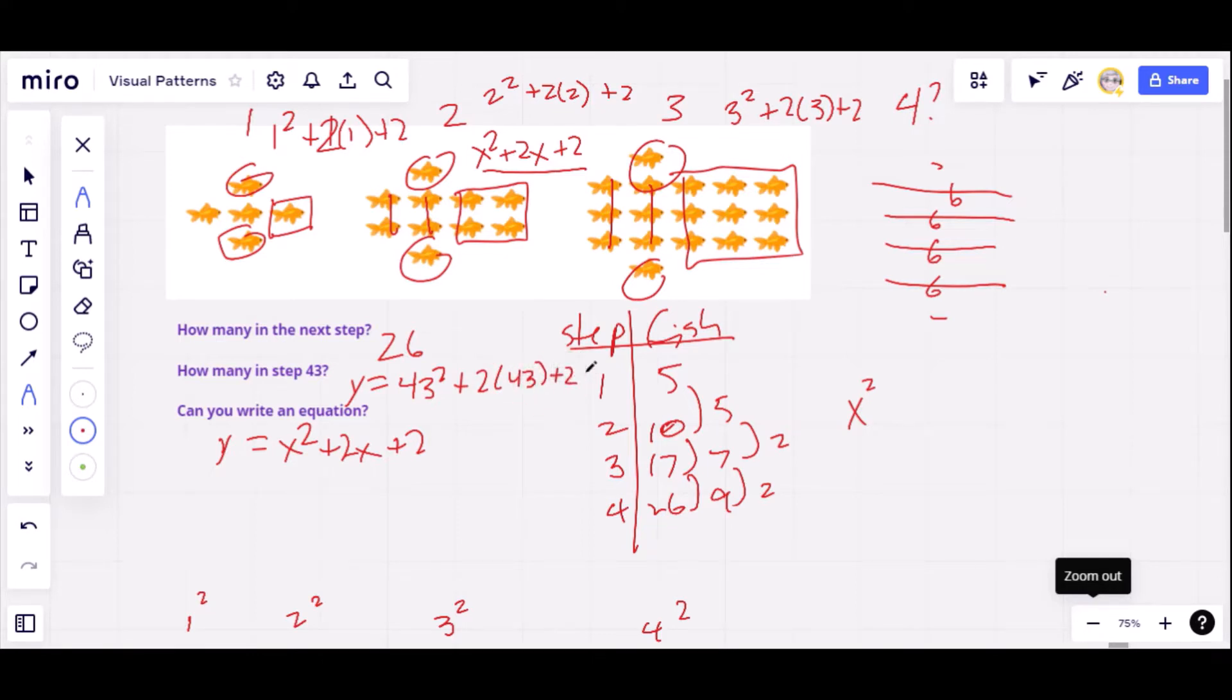So 43 squared, 1,849 plus 2 times 43 is, well, that's 86, and plus 2. So 1,849 plus 88, and we'll get a 7 there, and that's 13 and 9. So I'm getting 1,937. You might want to double check my numbers.